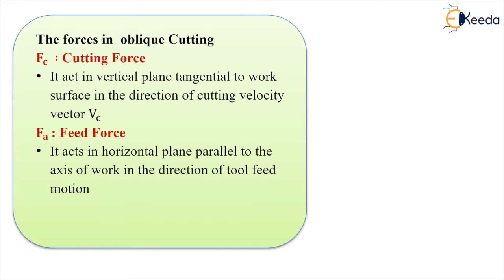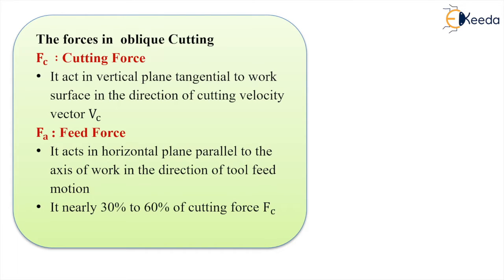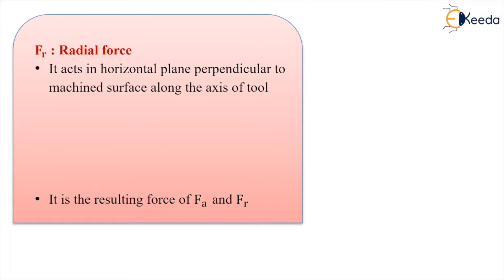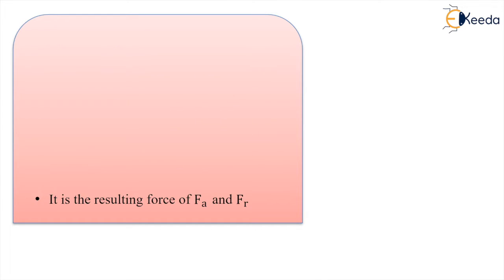Ft is the thrust force having two components: one is the feed force and another is the radial force. The feed force Fa is acting in the horizontal plane, parallel to the axis of the workpiece in the direction of tool feed motion. You can see here Fa is the horizontal component of Ft acting parallel to the axis of the workpiece or parallel to the feed motion of the tool. The radial force Fr is acting in the horizontal plane but perpendicular to the machined surface.